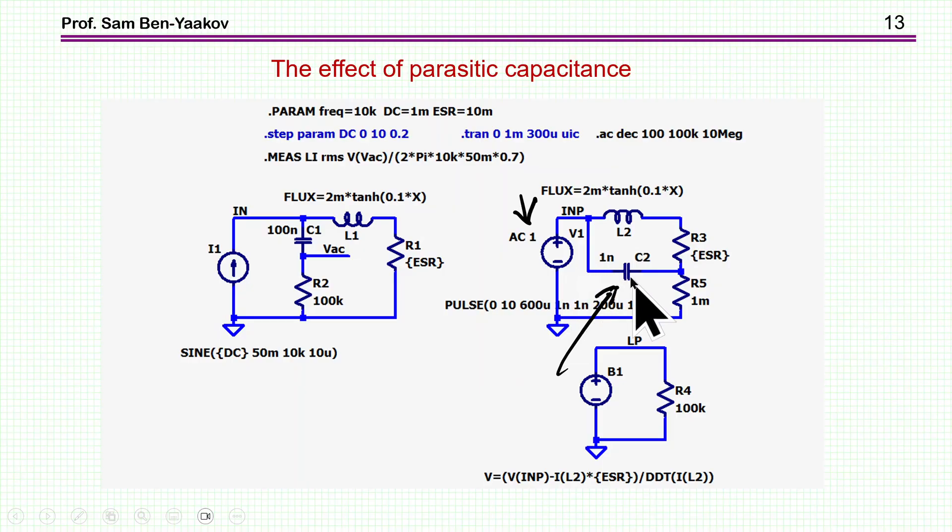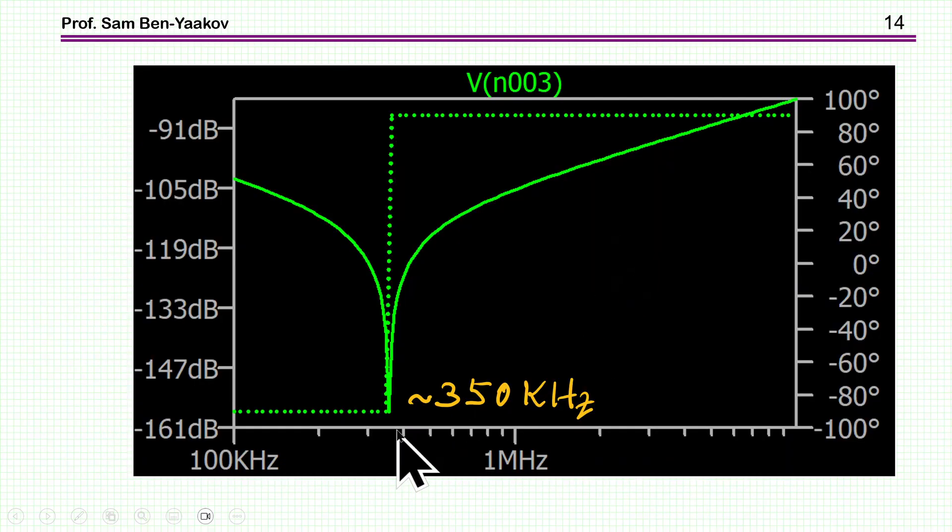What about the effect of the parasitic capacitance? I'm showing here a very simple model in which there is a parallel capacitance to the whole inductor. This is not very accurate of course, but this is done in many cases as a first approximation. I've put here a 1 nanofarad capacitor in parallel to this 200 microhenry. First thing I'm going to do is run an AC analysis, a small signal AC analysis, just to see the resonant frequency of this combination. And here it is, I see that the resonance is at 350 kilohertz.